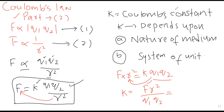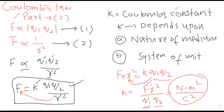Putting units here: force का unit है newton, R का unit है meter, so newton × meter² divided by Q1 and Q2 — the unit of charge is coulomb, as defined in the previous lecture। Coulomb multiplied by coulomb gives coulomb squared. So the unit of k is newton × meter² per coulomb squared — kindly remember this unit of k।